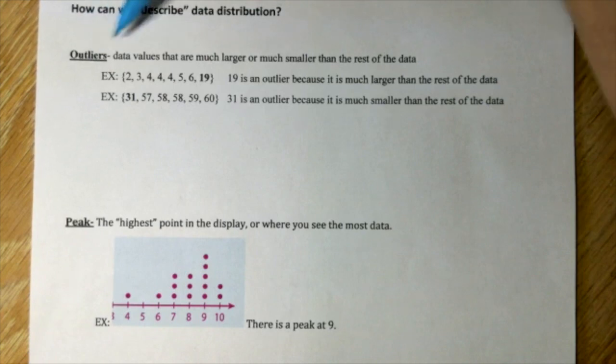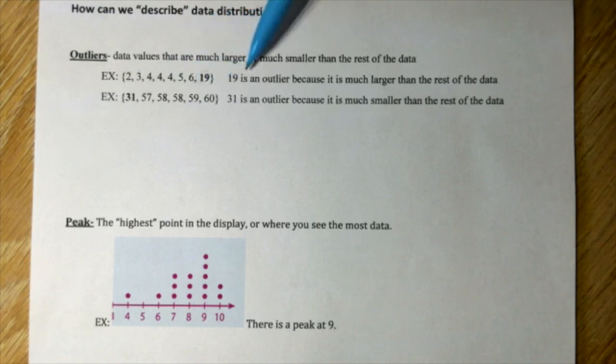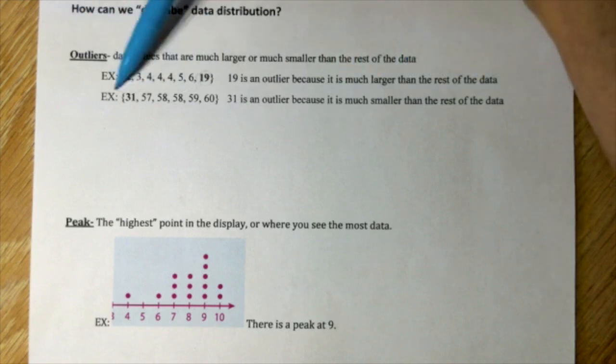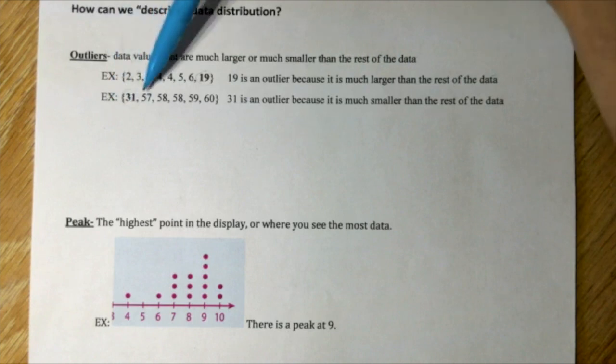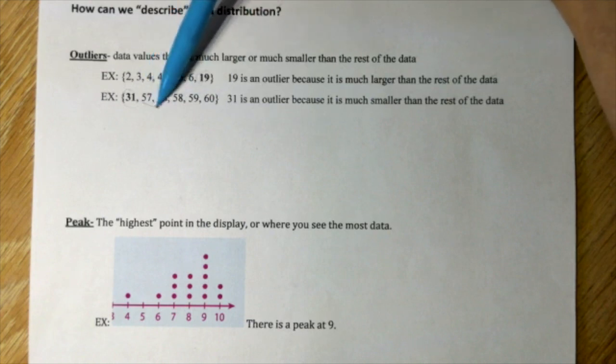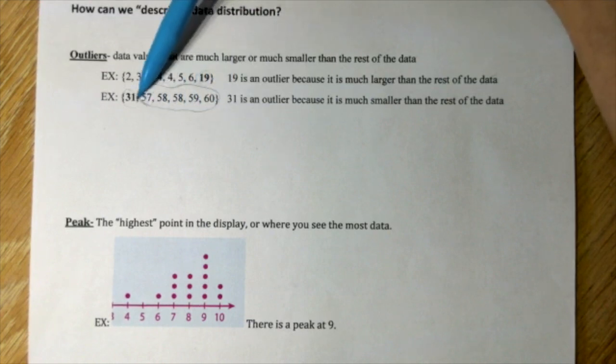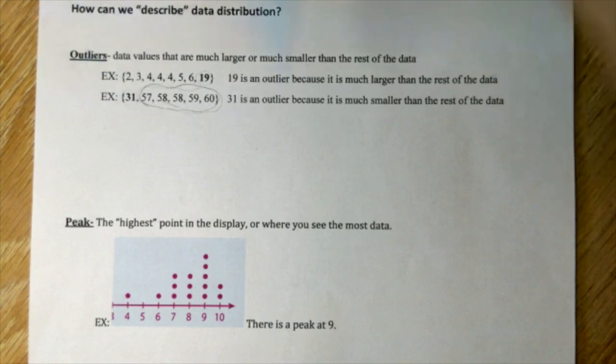Outliers - data values that are much larger or much smaller than the rest of the data. Look at these two examples. First example: 2, 3, 4, kind of consecutive, very close to each other. But all of a sudden, 19. 19 will be the outlier because it's much larger than the rest of the data. Next example: 31, 57, 58, 58, 59, and 60. All of these are pretty close, consecutive numbers. 31 is an outlier because it is much smaller than the rest of the data.